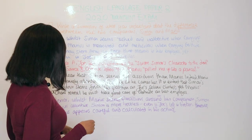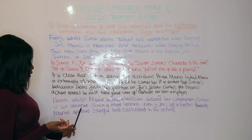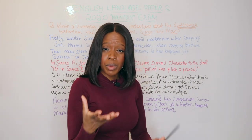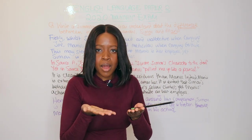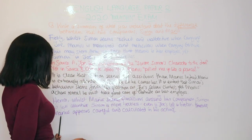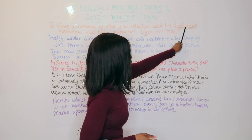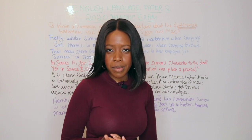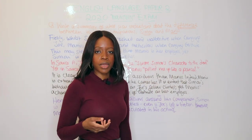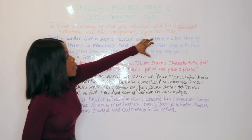For the link back to the question: 'Hence, whilst Marius seems punctilious — meaning careful — around his companion, Simon is less attentive and more reckless, even if Joe's leg is broken.' I'm noting that Simon is reckless despite his friend having a broken leg while helping him down the mountain. 'However, Marius appears careful and calculated in his actions.' The link makes the key differences crystal clear and highlights the interesting contrast in their behaviour.